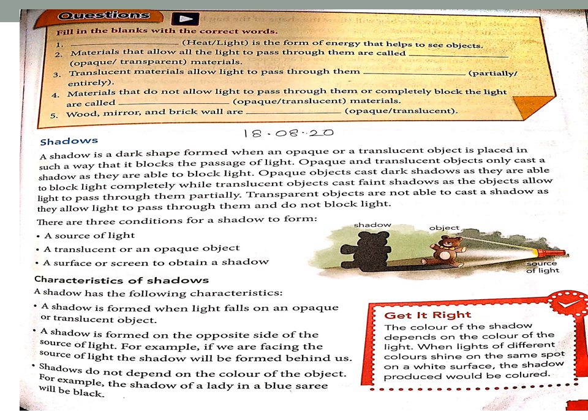Let me repeat: what is a shadow? It is a dark shape — the shadow itself is not visible to us as a colored object; we only see the shape. It is formed when an opaque or translucent object is placed in the path of light. Opaque materials do not allow the light to pass through them; translucent materials pass the light partially. When you place such an object in between a light source and a surface, it blocks the passage of sunlight. So only opaque and translucent objects can cast a shadow.